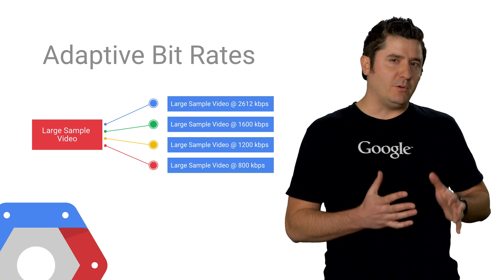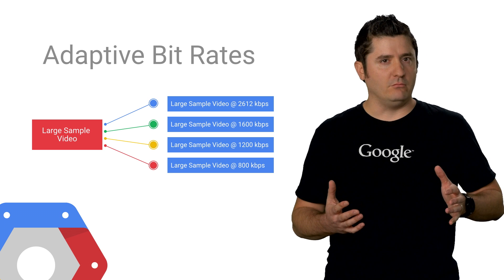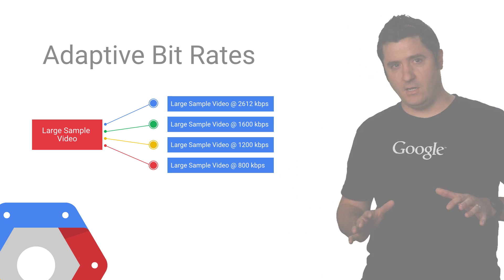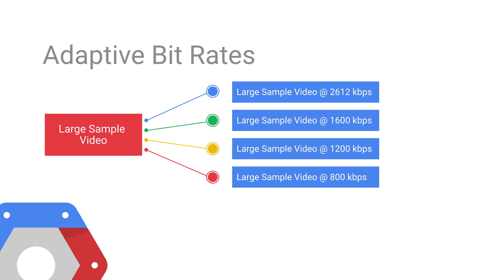Check out this diagram. I have a sample video player on Google Cloud Platform, and it might be serving up multiple formats all at once. I have a large sample video at 2612 kilobits per second, another at 1600 kilobits per second, and another at 1200 and 800, and so on. The goal is to select the right encoding profile to ensure each device consuming my video content will receive the right format and right size appropriate for their connection.